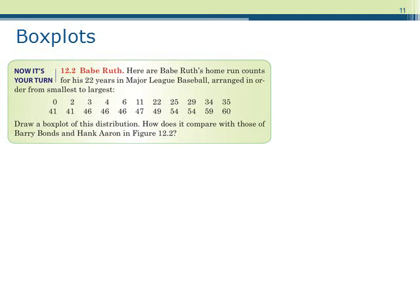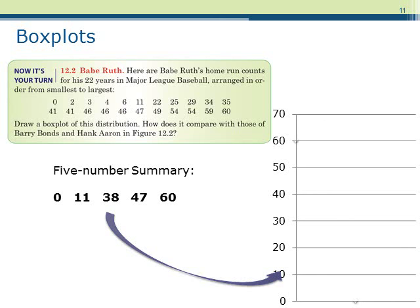Let's do an example together where we construct a box plot. Recall, using Babe Ruth's home run counts, we found that the median is 38 and the quartiles were 11 and 47. Since the smallest observation is 0 and the largest is 60, the five-number summary is: 0, 11, 38, 47, and 60.